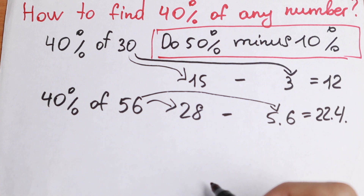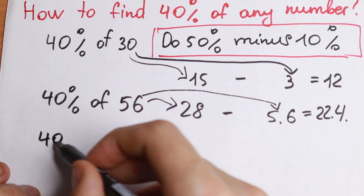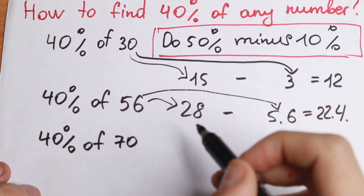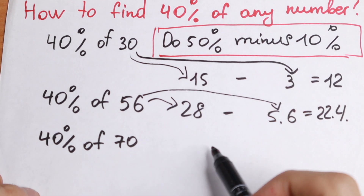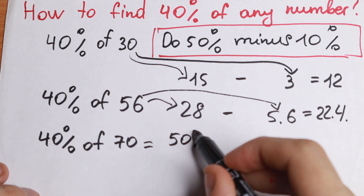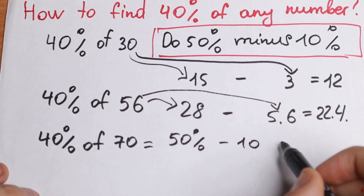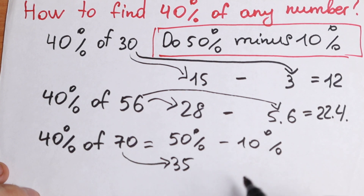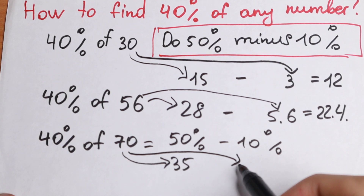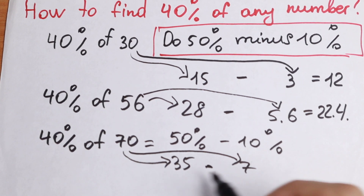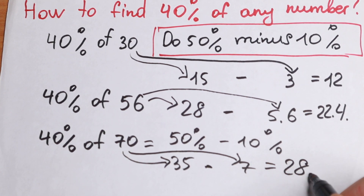Let's solve one more example: 40% of 70. First we need to find 50%, then minus 10%. So write 50% minus 10%. 50% of 70 equals 35. And 10% — divide by 10 — gives us 7. So 35 minus 7 equals 28.